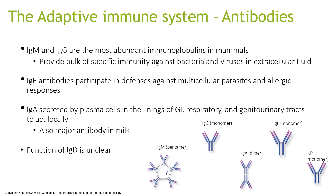IgM and IgG are the most abundant immunoglobulins in mammals and provide the bulk of specific immunity against bacteria and viruses. IgE antibodies participate in defenses against multicellular parasites and allergic responses. IgA is secreted by plasma cells in the linings of the GI, respiratory, and genitourinary tracts to act locally, and is also a major antibody in breast milk. The function of IgD remains unclear.